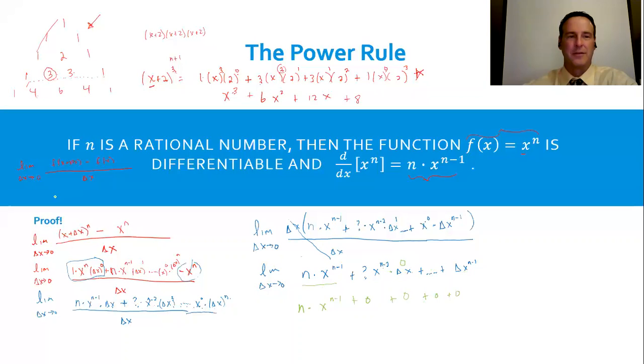And the only thing that you have left is n times x to the n minus 1. And remember, this over here is your derivative formula. That is f prime of x.